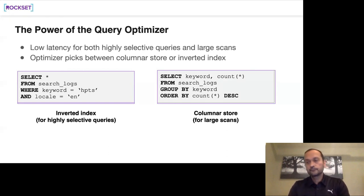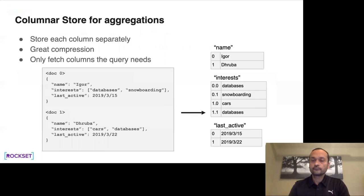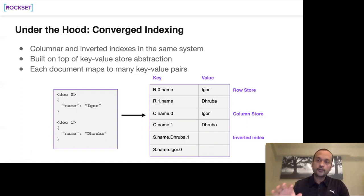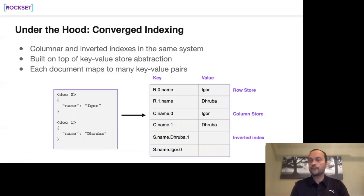Question: going back to decomposing documents into three index types — are the indexes stored in the same RocksDB table space, intermixing the inverted index, column store, and row index? Yes — all keys starting with 'R' represent rows, 'C' represent column stores, and 'S' represent inverted indexes, all within one table space. RocksDB has column families, but we don't use them because we get better performance managing it ourselves.